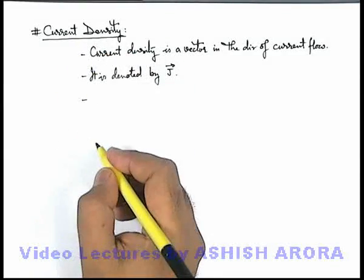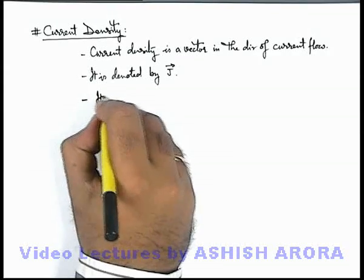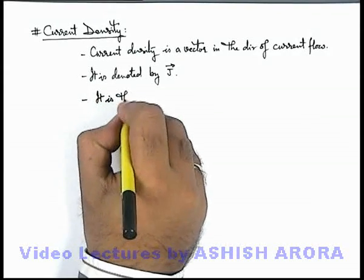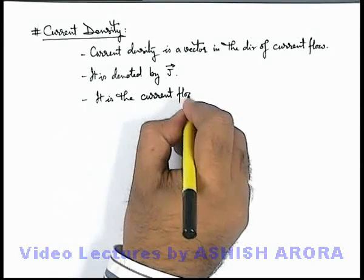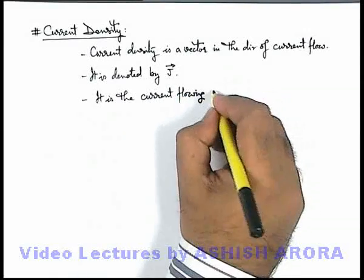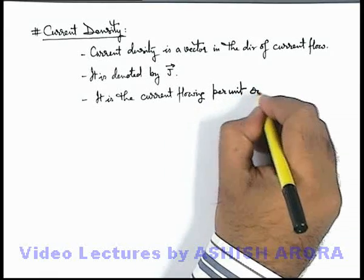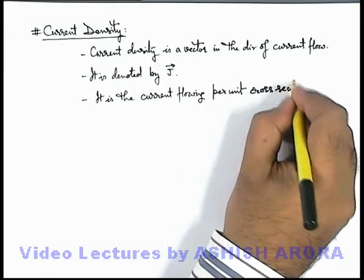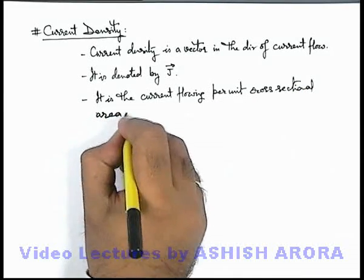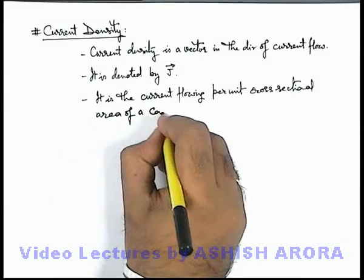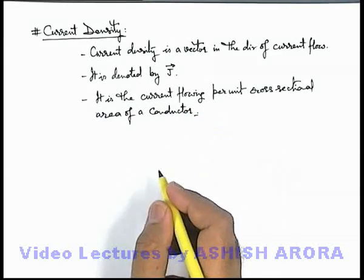Another important fact about current density: we can write its magnitude as the current flowing per unit cross-sectional area of a conductor. This is the magnitude of current density.